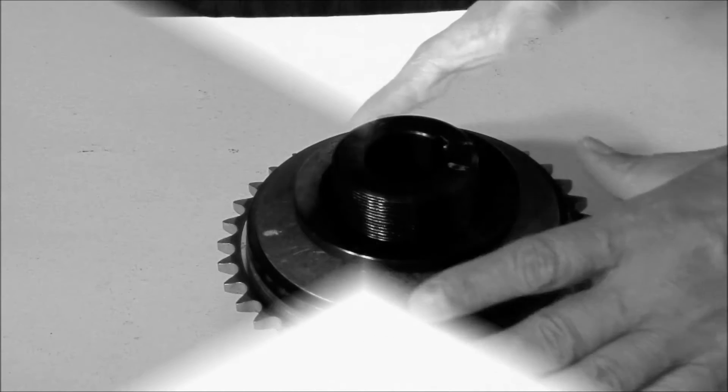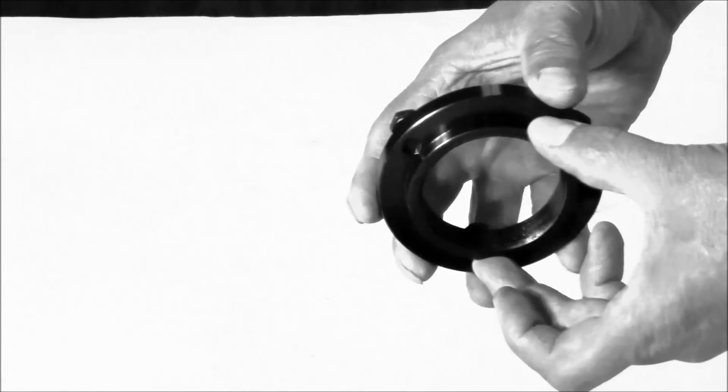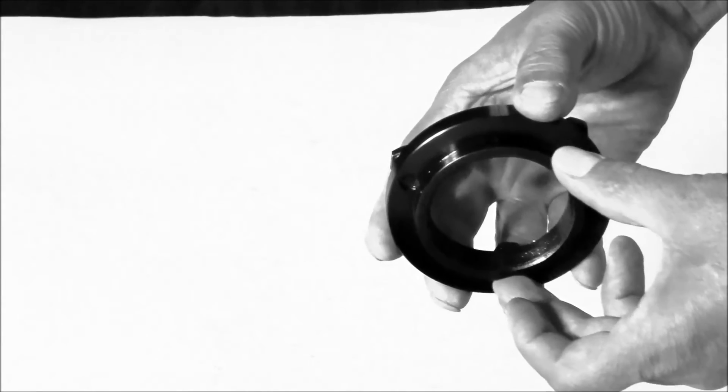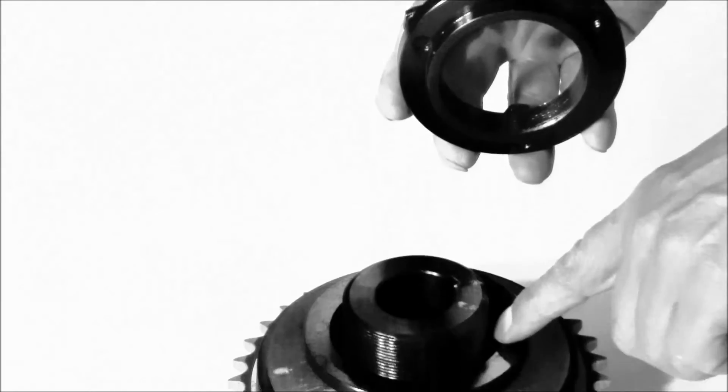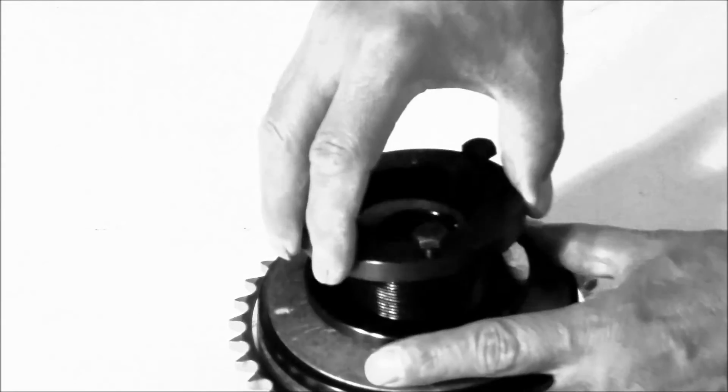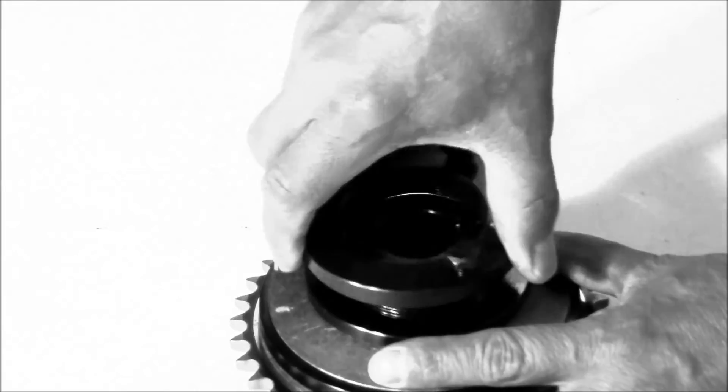And then thread the adjusting nut on. Right here on the bottom of the adjusting nut is key, that has to slide inside the spring retainer. And you'll feel it drop in there.